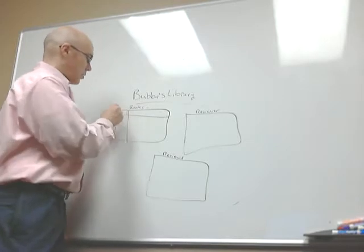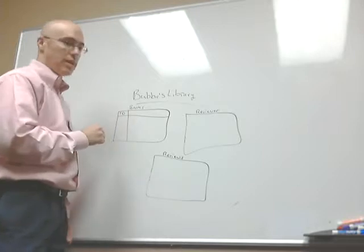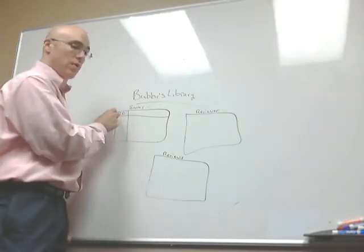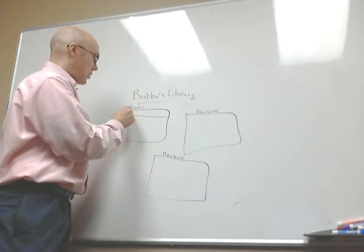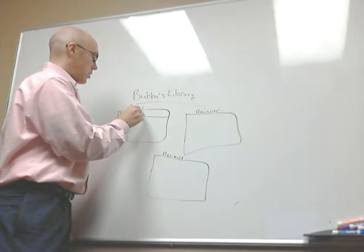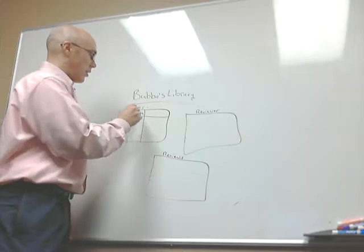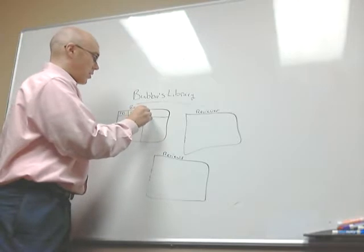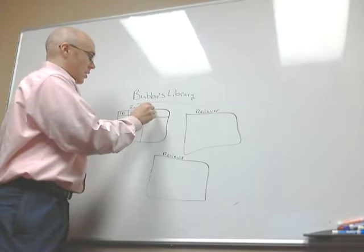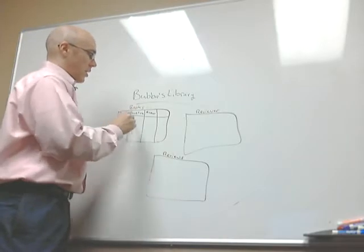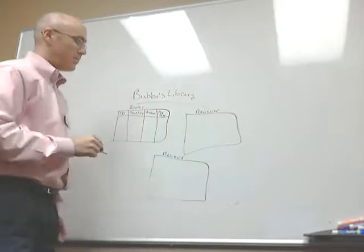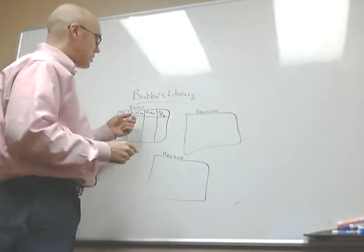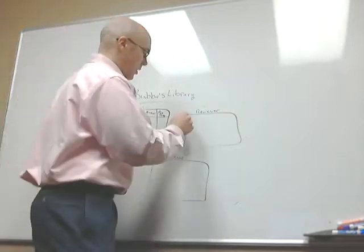In the Books table, the columns we're going to have — we always want to start with an ID, which will be a unique auto-incremented ID. The next column will be book title, then we'll have author, and another column will be pub date. That's our Books table.